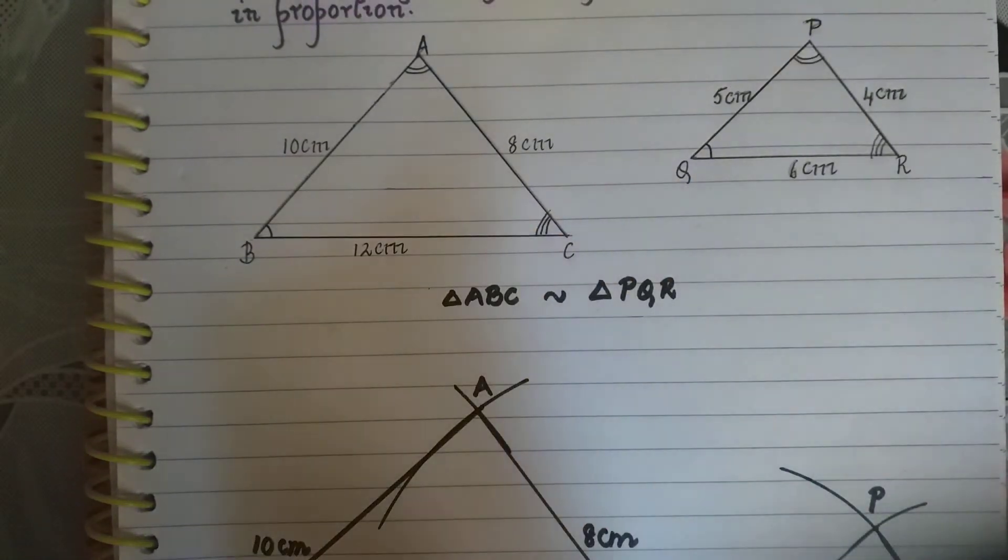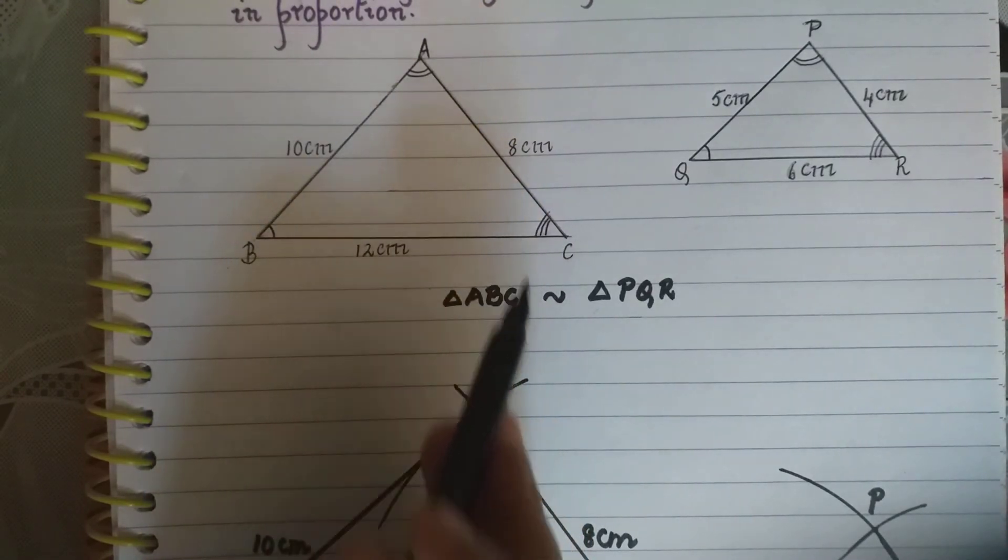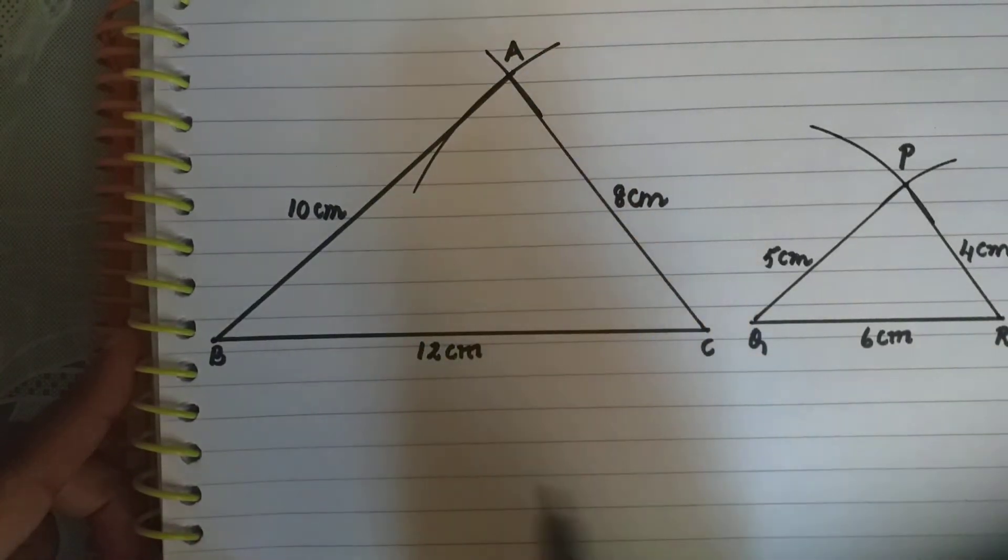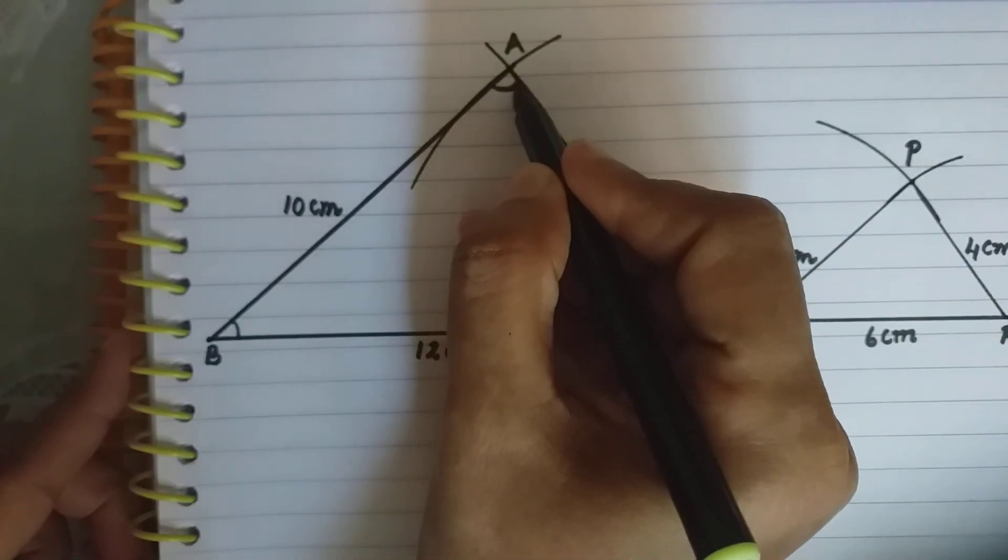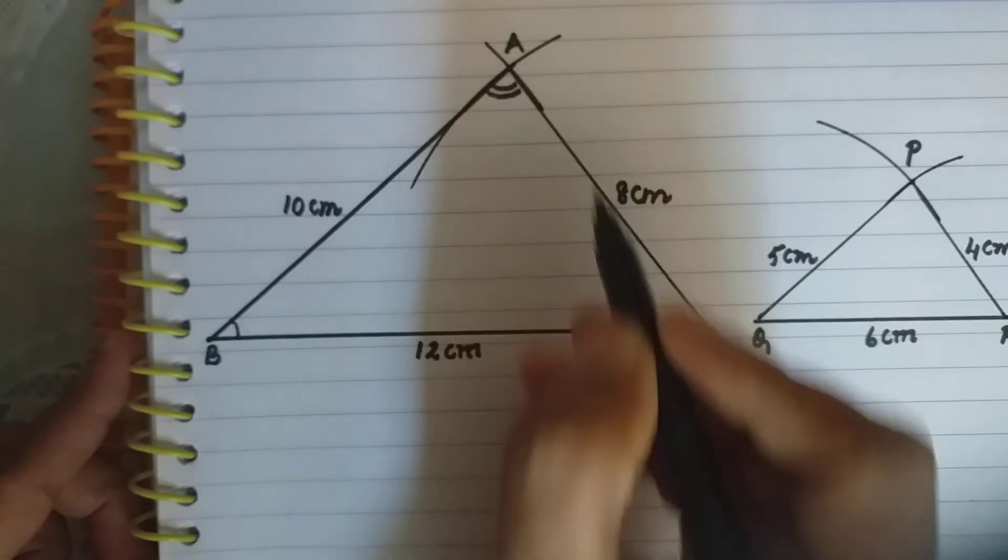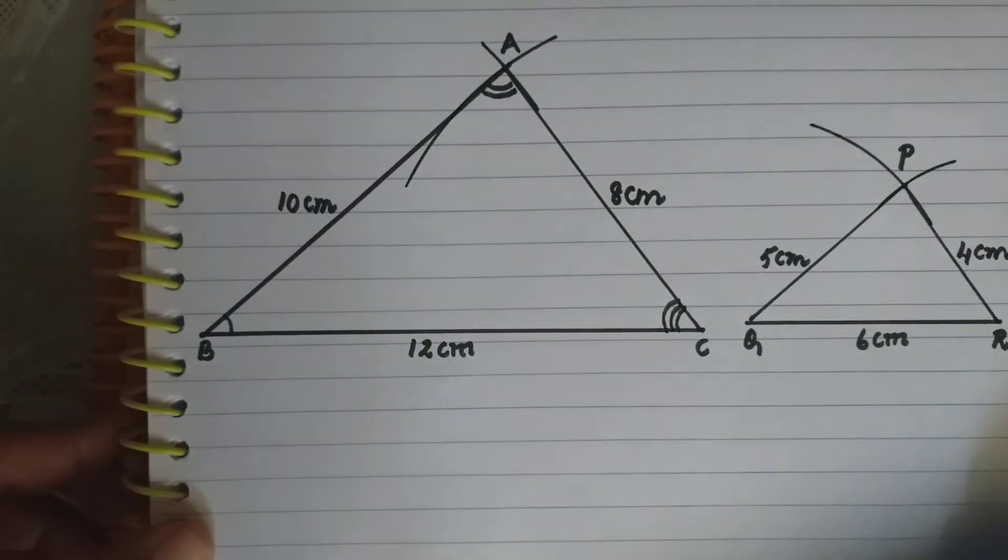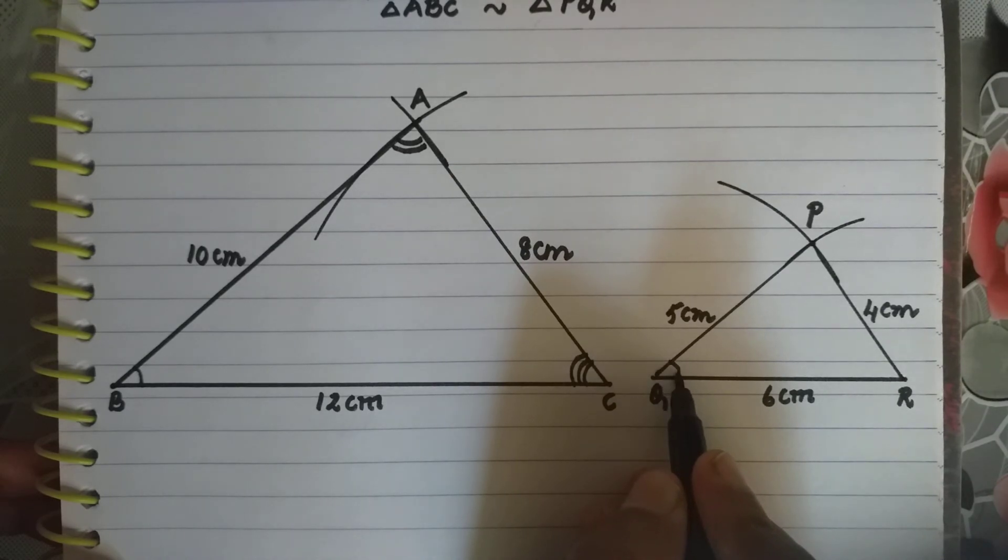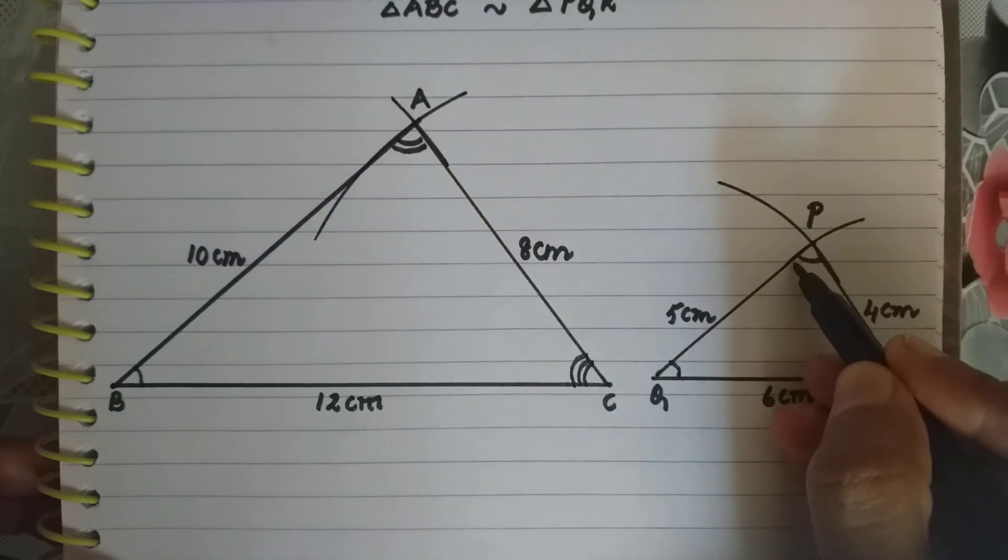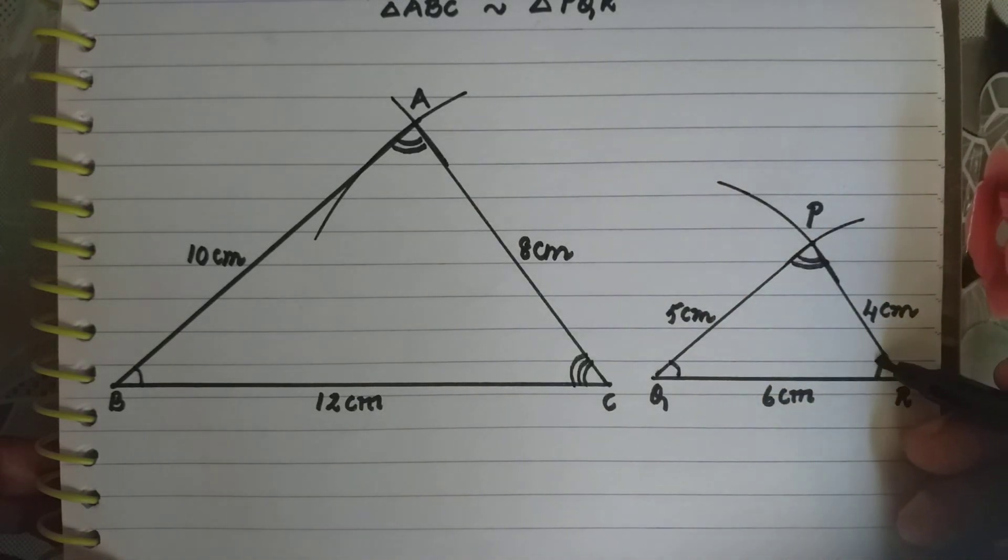Then how are the angles marked? Here one line, here two lines, and here three lines. So I will mark the angles here. This angle with one line, here with two lines, and here with three lines. Same way when marking the other triangle, this angle with one line, here with two lines, and here with three lines.